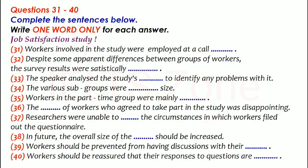Thirdly, as the questionnaires had been posted to the call centre for distribution, the researchers had had very limited control over the conditions in which participants completed them. For instance, their responses to questions may have been influenced by the views of their colleagues. All these problems may have biased the results.